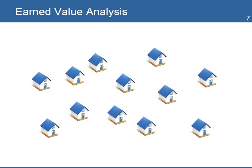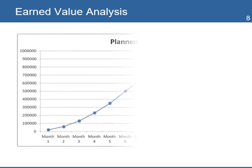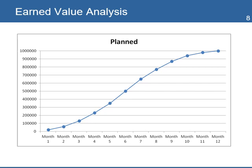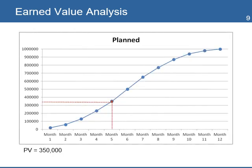Let's look at an example of how to use EVM. A project to build 12 rural health centers in 12 months at a cost of $100,000 each. The total budget is $1,200,000. Your plan is to complete one center each month. You develop a chart that shows the planned value of the project over the 12 months — this has the shape of an S-curve. On month 5, you plan to have made expenses in the value of $350,000.